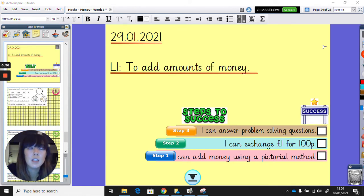That's kind of linked to what we did yesterday when we counted up amounts of money and if it equaled 100p it became £1. Step three is chili challenge as usual for this week, answering problem solving questions on a separate sheet. If you want to pause the video here and write the LI, you can.